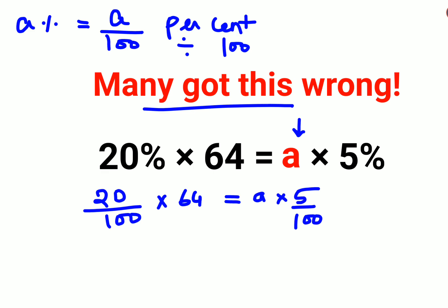Now in order to find the value of A, you need to multiply both sides by 100. Right? And divide both sides by 5.